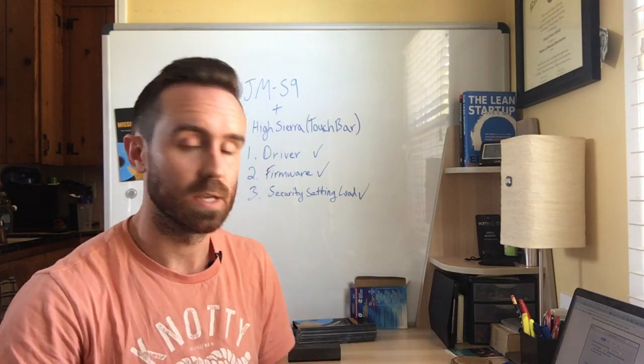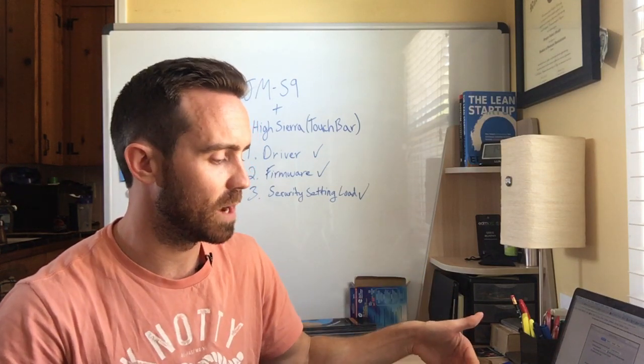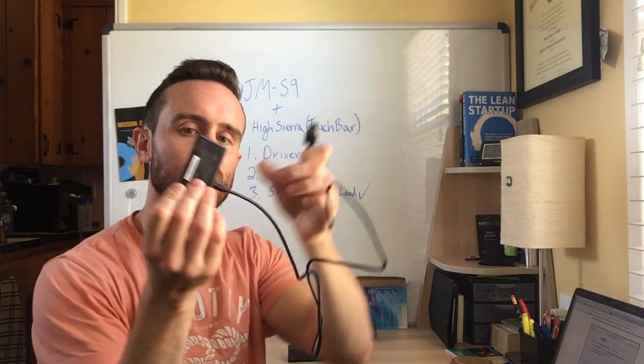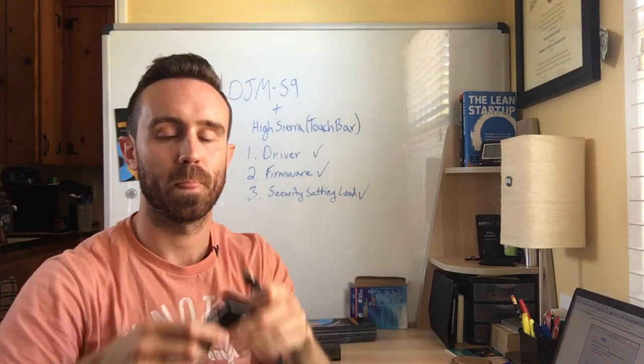So all you need to do is you do need the adapter USB C adapter to connect to your MacBook Pro, which can then connect to a regular USB, which is connected to USB port powered hub. And then you connect to your DJM S9 to this bad boy. And then it works.